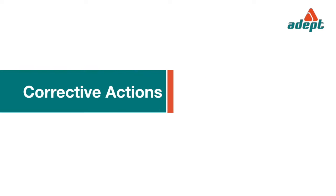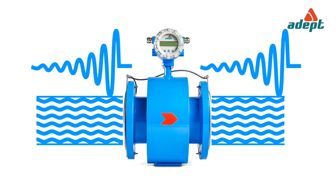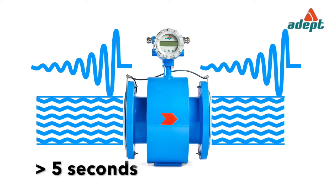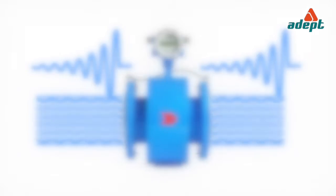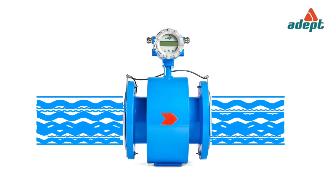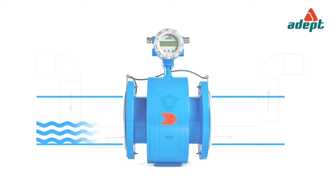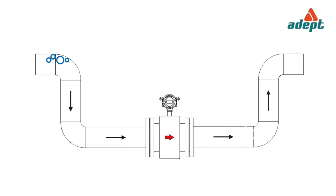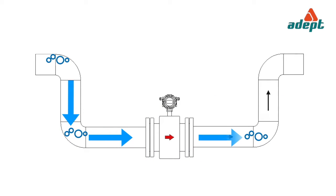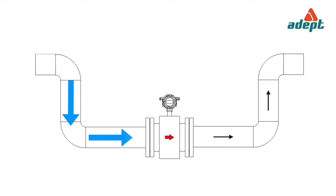Corrective actions: increase the damping factor in steps of 5 seconds and check. Allow flow to stabilize and check. Switch off feeder pipes one by one to determine the source of turbulence. Vent out excess bubbles and check. Install and orient the flow tube correctly.